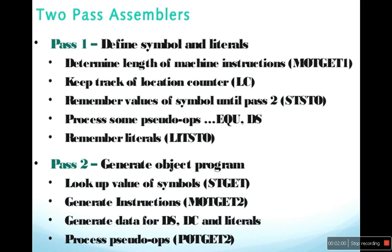Second pass characteristics: generate object program; lookup value of the symbols; generate instructions; generate data for DS, DC, and literals; and process pseudo-ops. These are the characteristics of pass two.